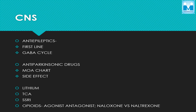You have to know the first-line drugs. Now coming to the central nervous system — anesthetic drugs will be covered in anesthesia, including side effects and profiles, so you don't have to read those in pharmacology. In pharmacology, what is important is anti-epileptics: the first-line drugs for partial seizures, generalized seizures, and absence seizures. There is also a GABA cycle here, similar to the autonomic nervous system, with various inhibitors and drugs acting on this cycle.